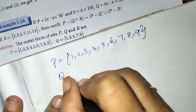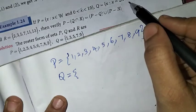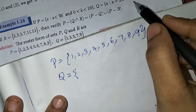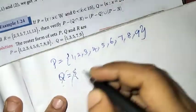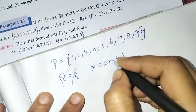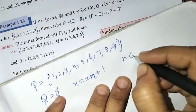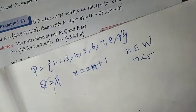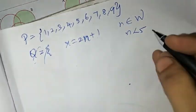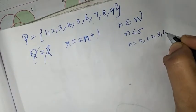Let's take a look at Q. Q set is equal to 2n plus 1, where n belongs to whole numbers. So x is equal to 2n plus 1, where n belongs to whole numbers and n is less than 5. So n takes values 1, 2, 3, 4.